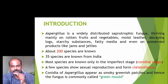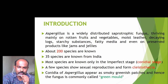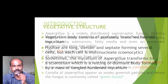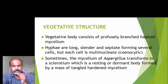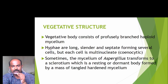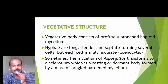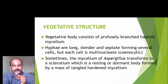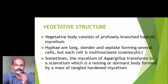A few species show sexual reproduction and form ascocarps called Cleistothecia. Conidia of Aspergillus appear as smoky greenish patches and hence the fungus is commonly called green mold. The vegetative body consists of profusely branched haploid mycelium. Hyphae are long, slender, and septate, forming several cells, but each cell is multinucleate, meaning it is coenocytic. Sometimes the mycelium transforms into a sclerotium, which is a resting or dormant body formed by a mass of tangled hardened mycelium.